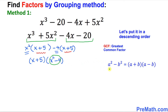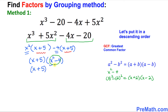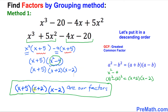Let me show you how. x squared minus 4 can be written as x squared minus 2 squared. We can apply the difference of squares formula where x squared minus 2 squared equals x plus 2 times x minus 2. So the full factored form is x plus 5 times x plus 2 times x minus 2. These are our complete factors.